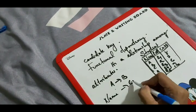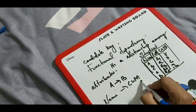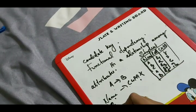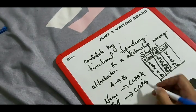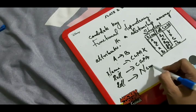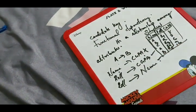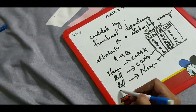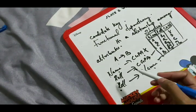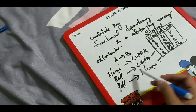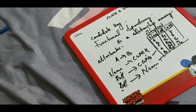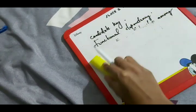So we cannot say name determines CGPA, because name does not uniquely determine a student. But roll number determines CGPA — this is a functional dependency. The unique attribute, roll number, functionally determines the other attributes. That is the concept of functional dependency.